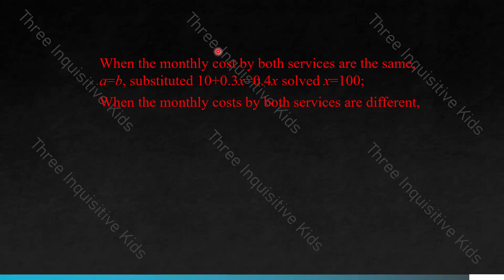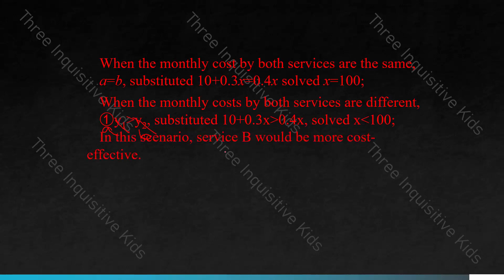But if the monthly costs are different, there are two scenarios. The first is if A is greater than B. Substituting, 10 plus 0.3x is greater than 0.4x, which solves to X less than 100. In this scenario, service B would be more cost-effective.